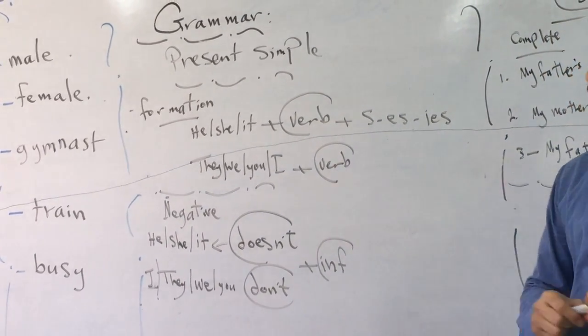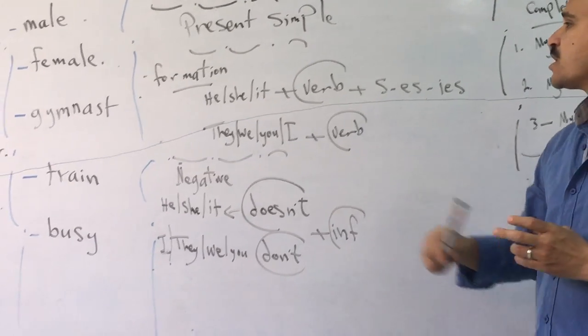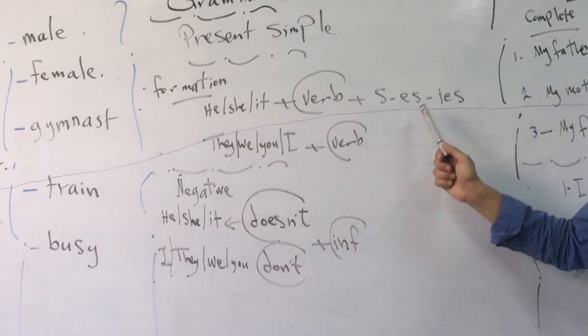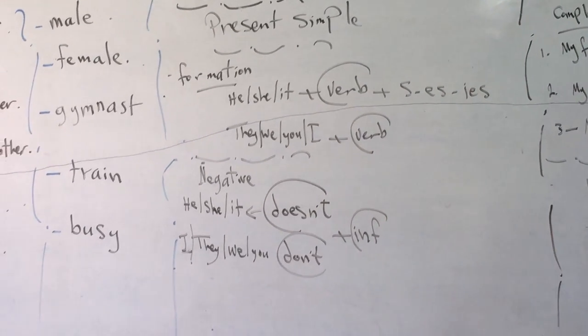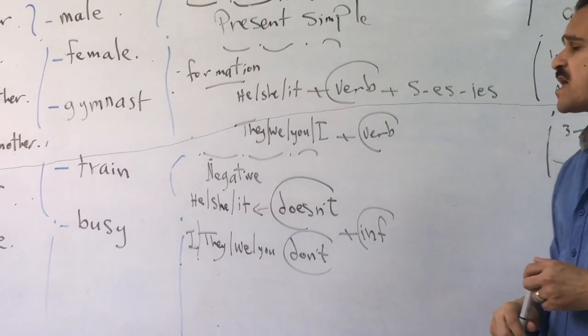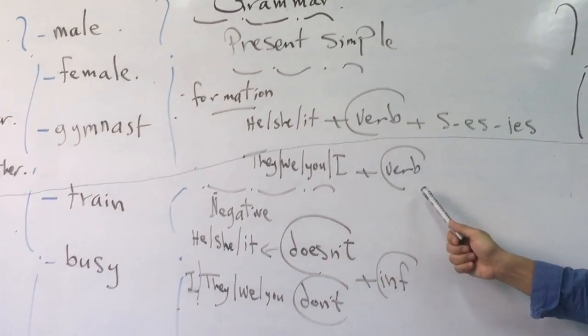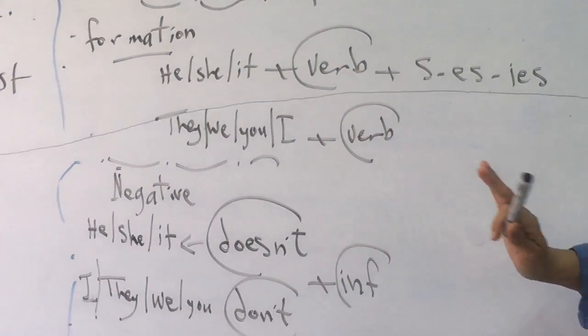Look at this - this is the formation of it. We use singular he, she, it with the verb plus s, es, or ies. We use plural they, we, I, you with just the verb without anything.